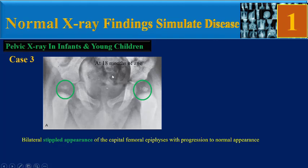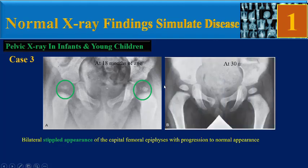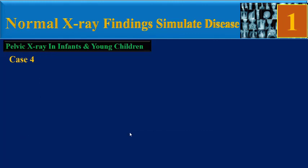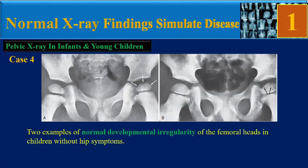Case 3: bilateral stippled appearance of capital epiphysis with progression to normal appearance. This image is at 18 months of age, and this one is at 30 months of age.